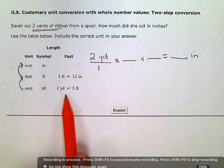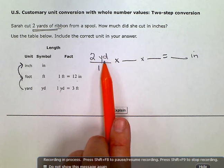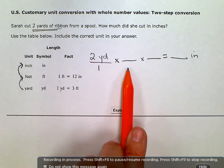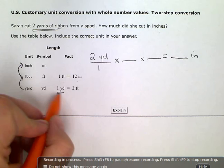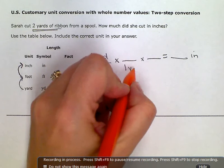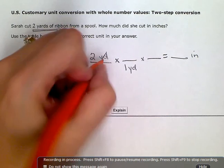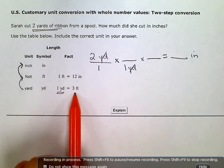We're going to start with this information right here. Since I have yards as my unit in the numerator, in this first conversion ratio or fraction right there, I'm going to put this one yard in the denominator so that those will cancel out and the three feet goes up top.